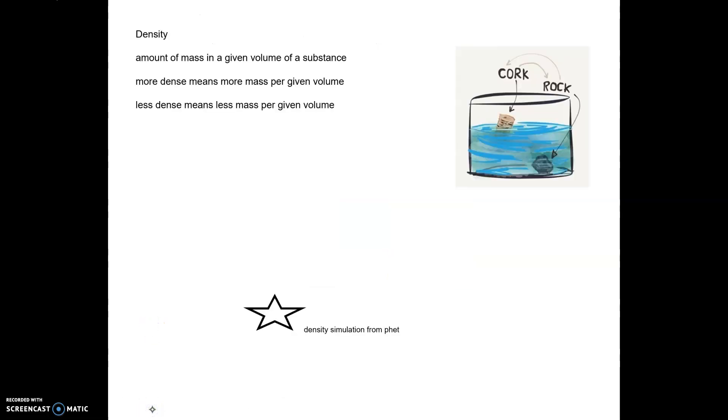Density is the amount of mass in a given volume of a substance. More dense means more mass given per volume, and then less dense means less mass per given volume. So in this picture we have a cork. It's not very dense. That's why it can float. A rock is very dense, and that's why it sinks.